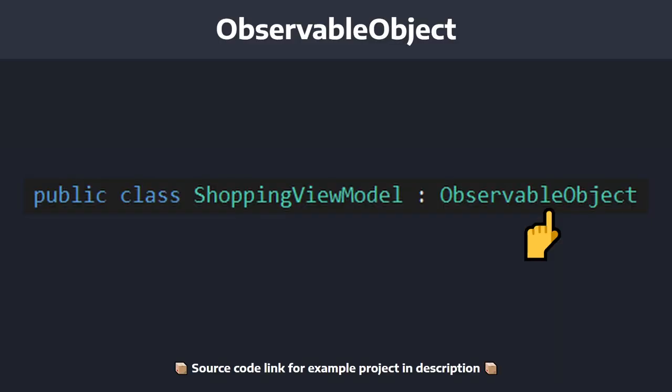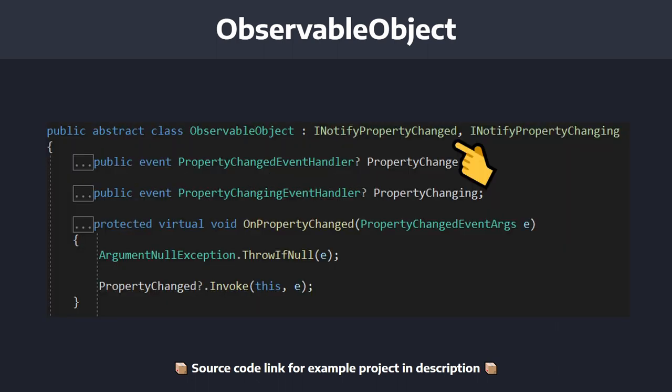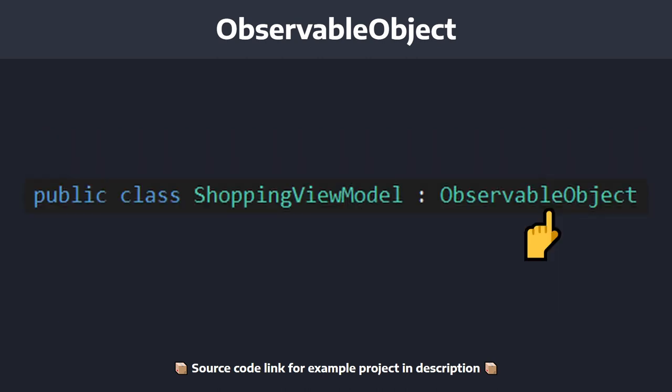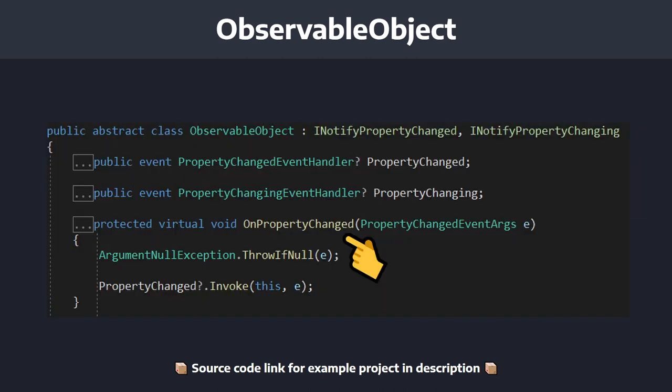For one, it offers an ObservableObject that implements the INotifyPropertyChanged interface. The key here is that we don't need to implement our own base view model whenever we spin up a .NET MVVM project. We can inherit from ObservableObject and use the standard OnPropertyChanged method to notify our UI whenever our properties change.